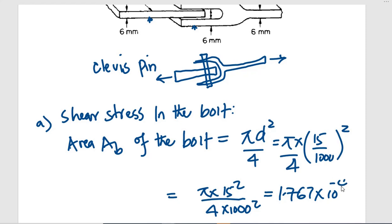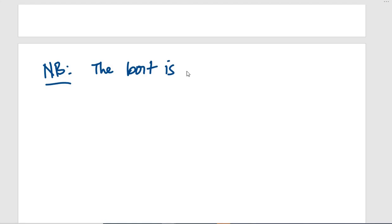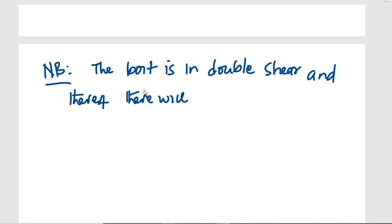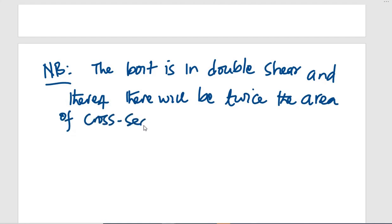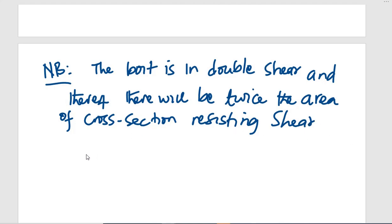Now let us note one guiding principle here: the bolt is in double shear. This means the area of cross-section resisting shear will be twice the cross-sectional area. Therefore, the area which will resist shear will be twice the area of the bolt calculated above.